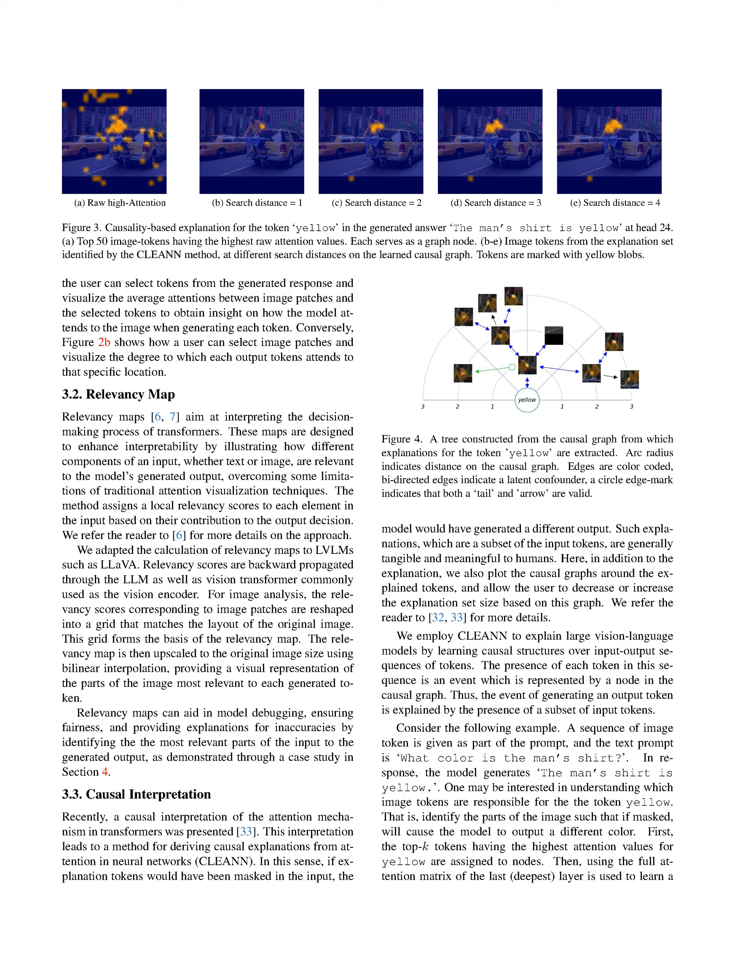We explore the advancements in large language models, LLMs, and their integration with visual understanding to create large vision language models, LVLMs. These LVLMs have shown remarkable abilities in following human instructions for both textual and visual tasks, yet they are still prone to hallucination, especially in the visual modality. To address this challenge, we introduce LVLM Interpret, an interpretability tool that adapts various methods to analyze and explain the inner workings of LVLMs, with a focus on transformer-based LLM front-ends. Through interactive analysis using raw attention, relevancy maps, and causal interpretation, our tool aims to enhance the understanding and trustworthiness of LVLM responses.